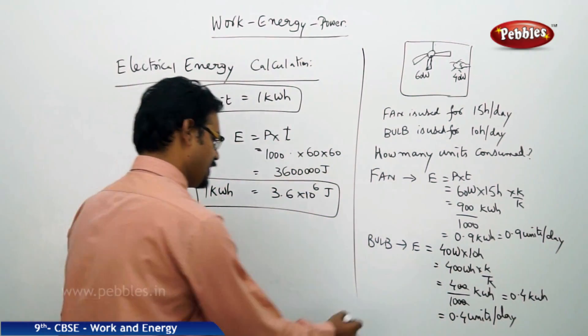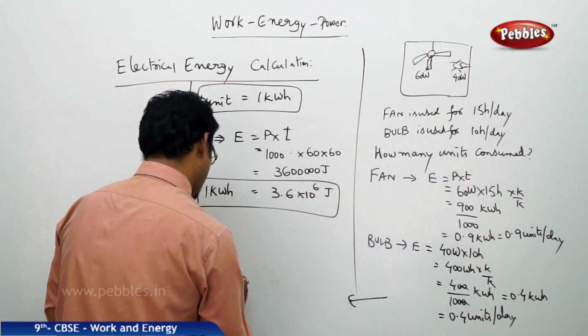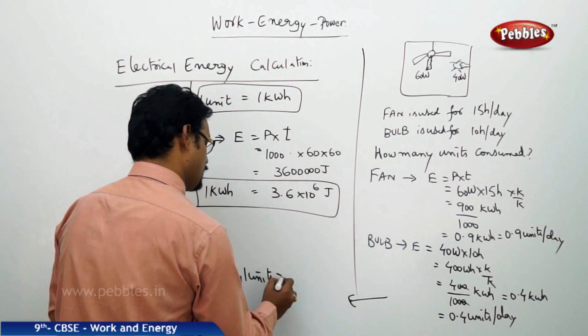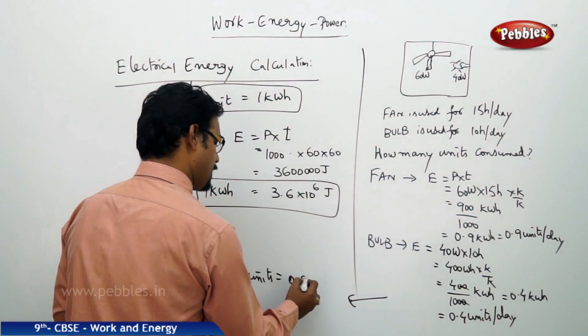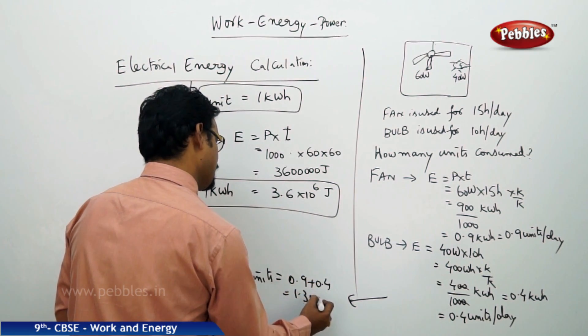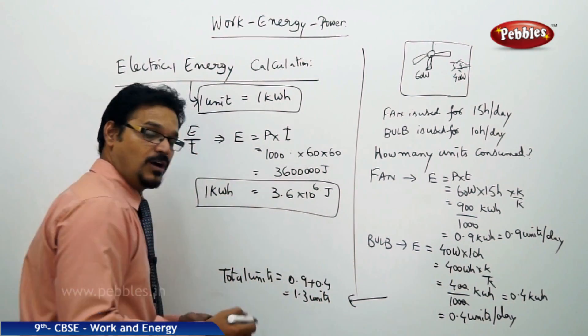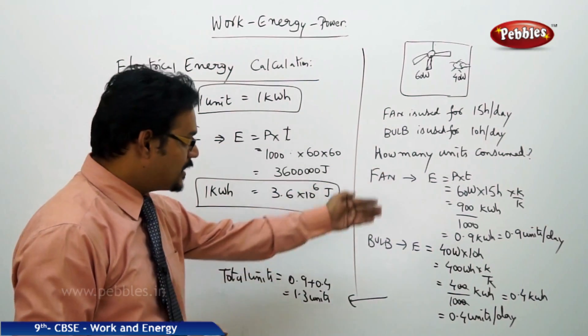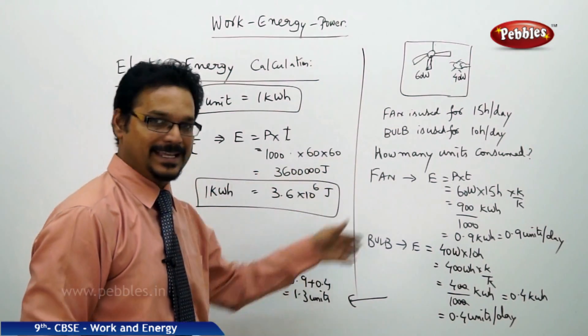So total units you have consumed is 0.9 plus 0.4, this is 1.3 units. So this is how they calculate automatically. 1.3 units. Now still if I add more questions to this case, say 1 unit cost equals to 2 rupees.